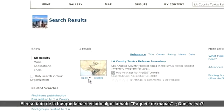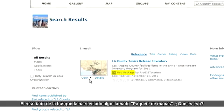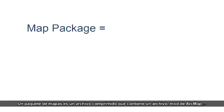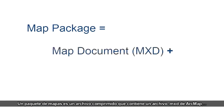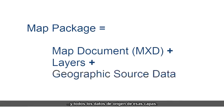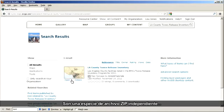The search result has revealed something called a map package. A map package is a compressed file that contains an ArcMap MXD file, which is a map document, plus all the layers contained in that map document, and all the source data for those layers. They're kind of like zip files in that they're self-contained and can be emailed or transferred around easily.